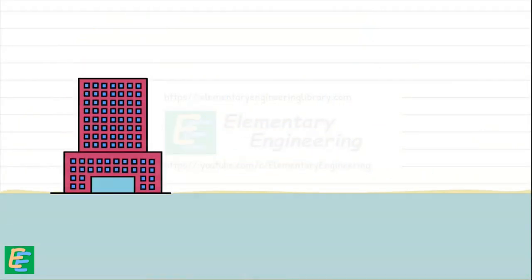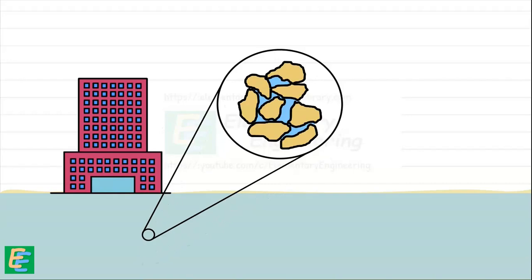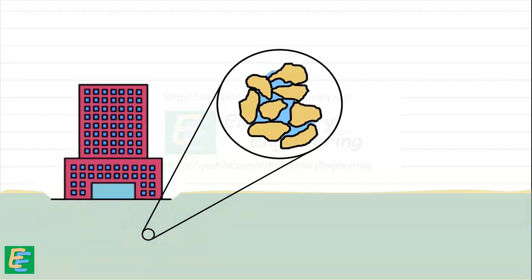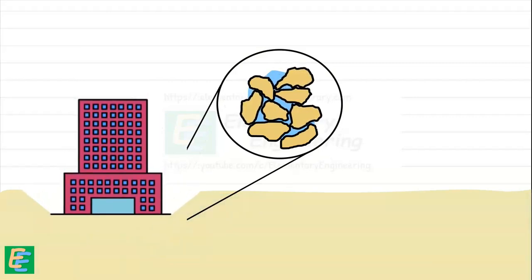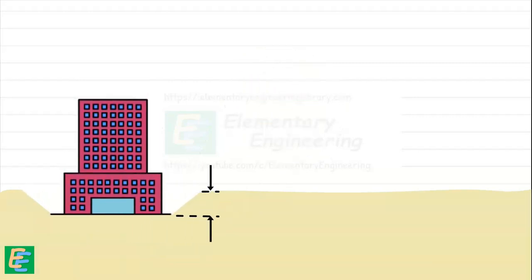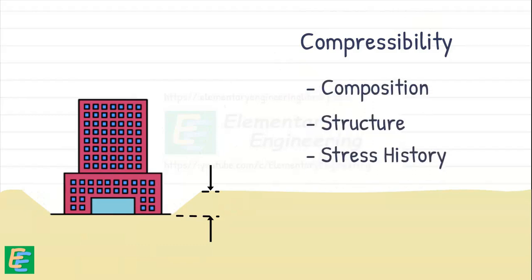When soils are loaded, they compress as water is squeezed out and soil particles are rearranged, reducing the soil's volume. The amount of this volume change depends on the soil's compressibility, which is closely tied to its composition, structure, and stress history.